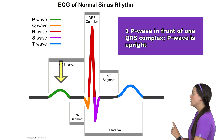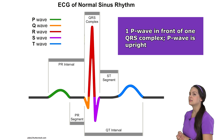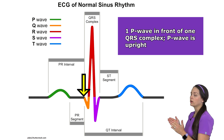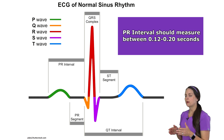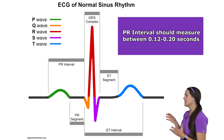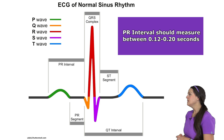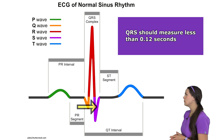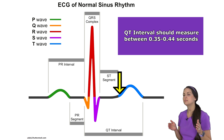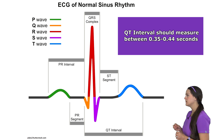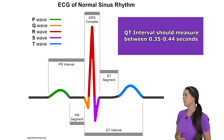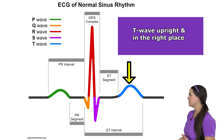First, make sure you have one P wave in front of one QRS complex, with that P wave upright. From the beginning of the P wave to the beginning of the QRS complex is the PR interval — always measure this. It should measure between 0.12 to 0.20 seconds, and it represents the delay in conduction by the AV node. The QRS complex should measure less than 0.12 seconds. The QT interval, from the beginning of the QRS complex to the end of the T wave, can measure between 0.35 to 0.44 seconds, varying by gender and heart rate. The T wave should be upright and in its expected location.